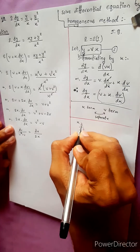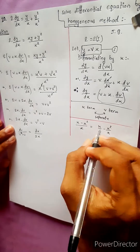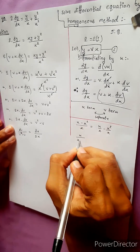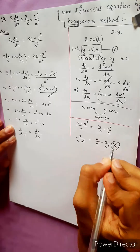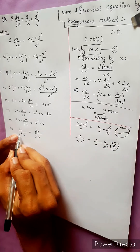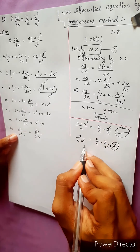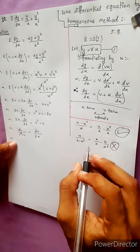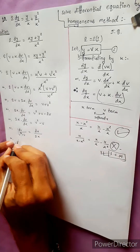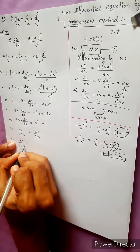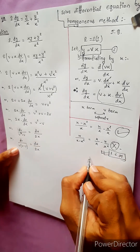Now split the left side using partial fractions. We write dv over v(v minus 1), splitting by v squared. This gives us two separate fractions to integrate.